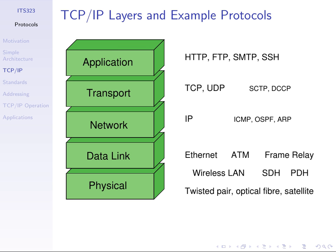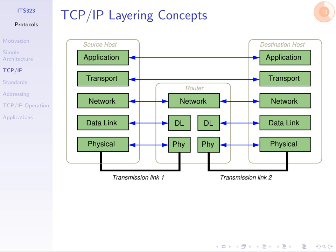That's a rough overview of what we covered last week. We gave this example with two end computers — a source host and a destination host, a PC and a laptop — connected via two links and one intermediate device called a router. So one link to the router and then another link from the router to the destination — a very simple network with two links.